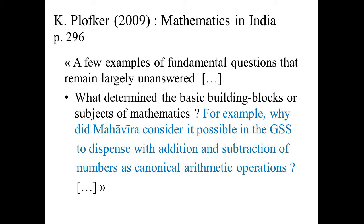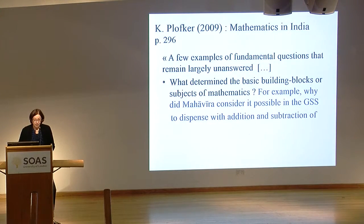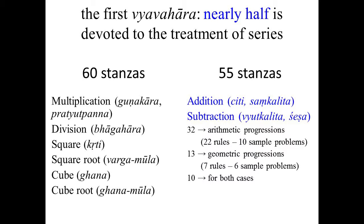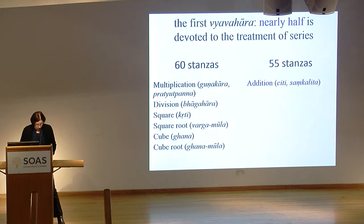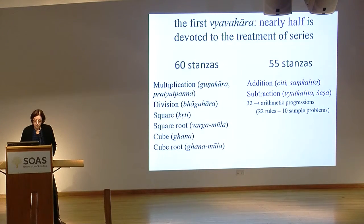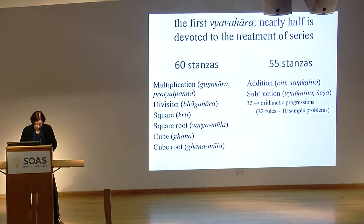In our master synthesis called Mathematics in India, Kim Plofker evokes some of the questions which are still unanswered. She asks, for example, why did Mahaviracharya consider it possible in the Ganita Sar Sangraha to dispense with addition and subtraction of numbers as canonical operations? To this question I would add another one: why has Mahaviracharya not only started with multiplication, but also given so much importance to these two operations on series? Nearly half of the first chapter is occupied by the first six operations, and the last two occupy nearly half.